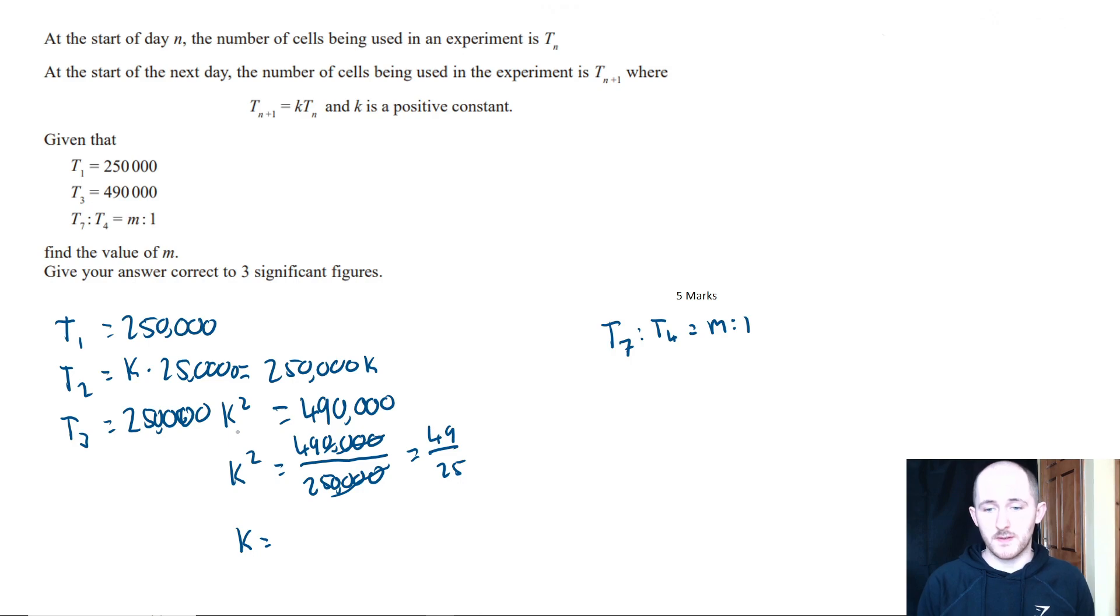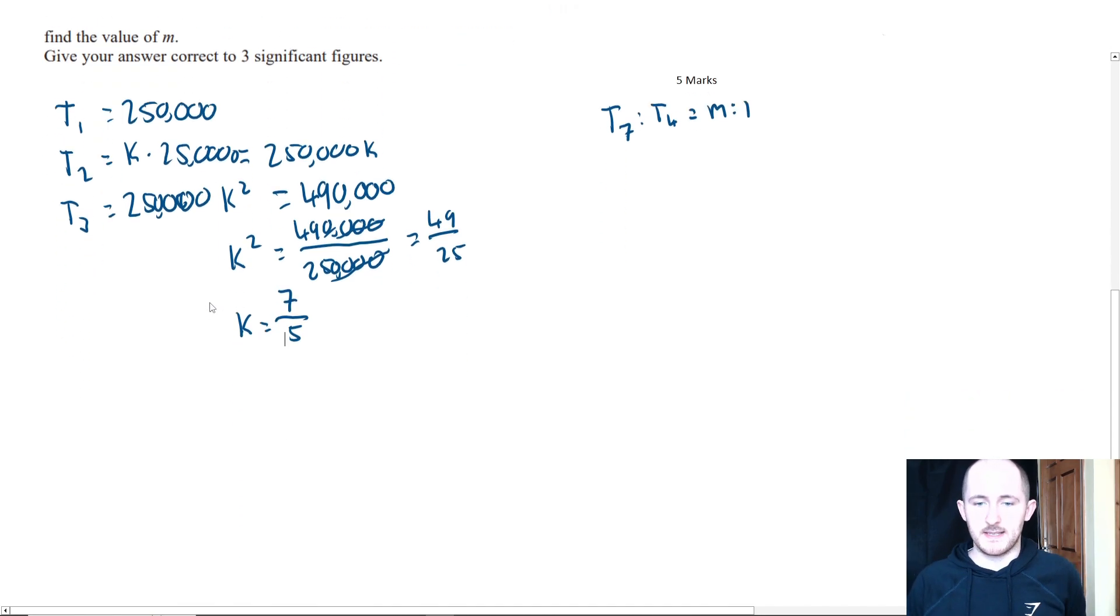To work out what k is, we're just going to take the square root of that. It tells me that k is a positive constant, so I'm only taking the positive solution for this.